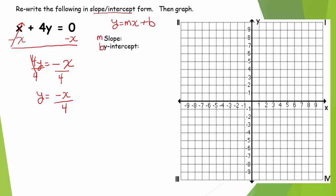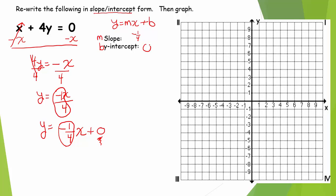We're almost in the form y equals some number — the slope — times x, plus some number — the y-intercept. What's in front of x? There's a 1 there. So this is y equals negative 1 over 4 times x. I'll just put plus zero. That tells me my slope is negative 1 fourth and my y-intercept is zero.